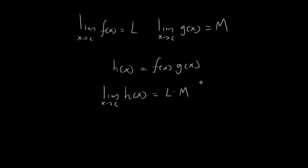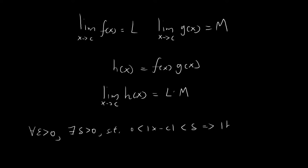In order to prove this, I need to establish the epsilon-delta definition. I need to establish that for whatever value of epsilon you come up with, there will always exist a value of delta greater than 0, such that if x is within a distance of delta away from c, then this immediately implies that h(x) will be within a distance of epsilon away from L times M.